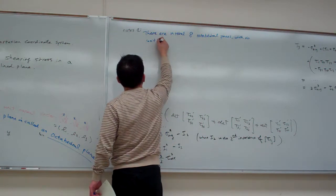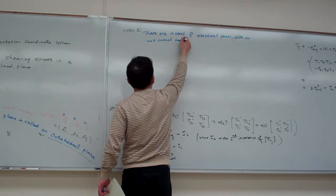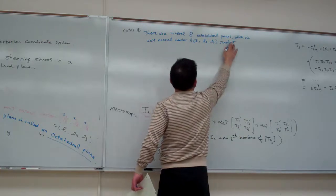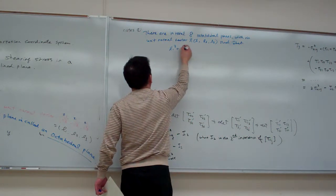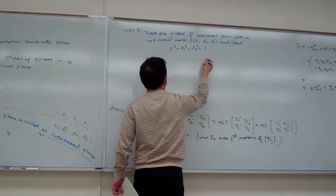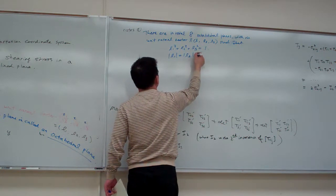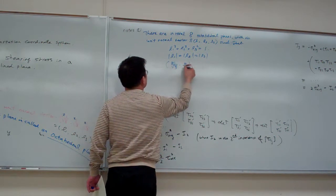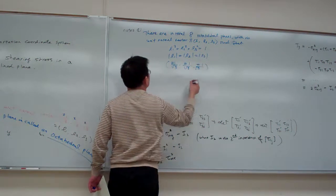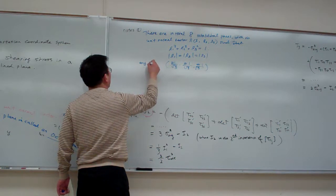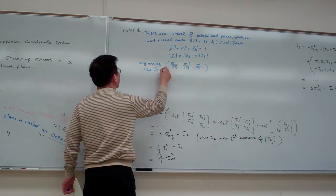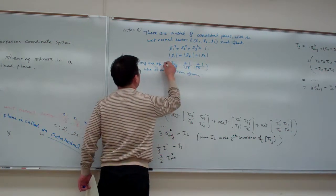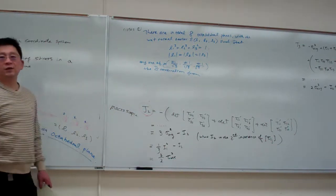The unit normal vectors have components L1, L2, L3 such that L1² + L2² + L3² = 1, and magnitude-wise L1 = L2 = L3. So the possible combinations are any one of the eight sign combinations, and those can be the unit vectors.